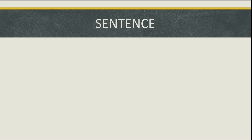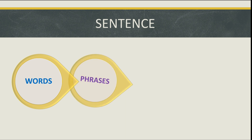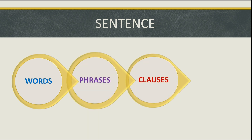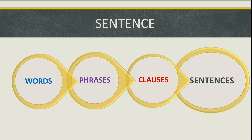Before moving on to the topic, we need to understand what is a sentence. A sentence is a group of words that gives us complete meaning. When a baby starts to talk, it doesn't start with a full sentence — it starts with a word, then two or three words, then a sentence. In the same way, two or three words combined together give us a phrase, but it does not give complete meaning. Then there is a clause, and for complete meaning we have a sentence.